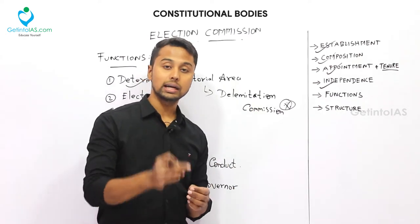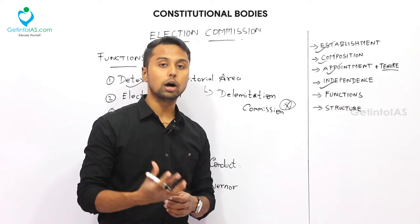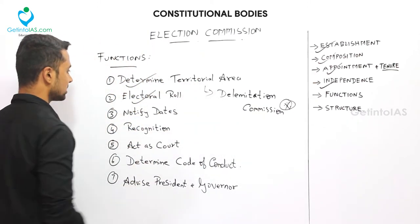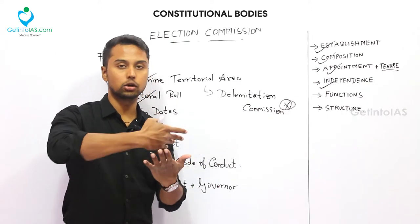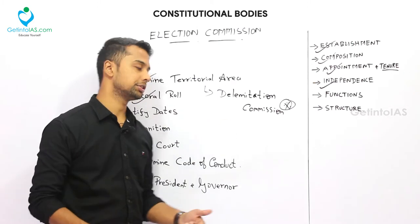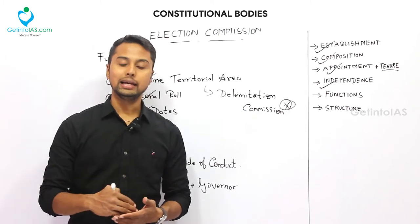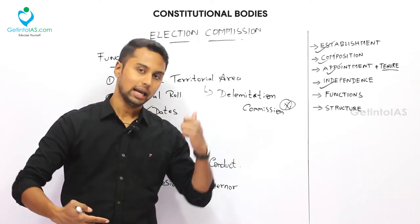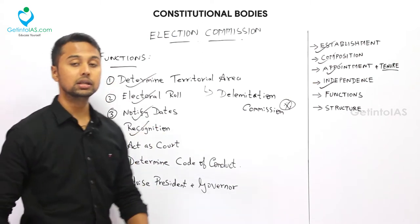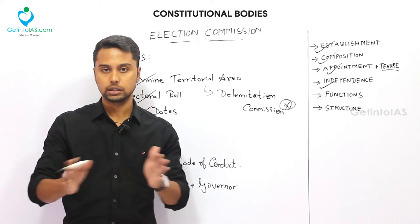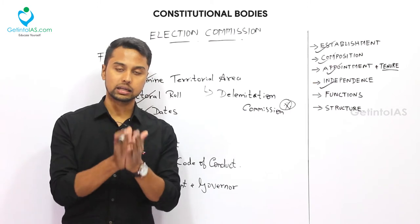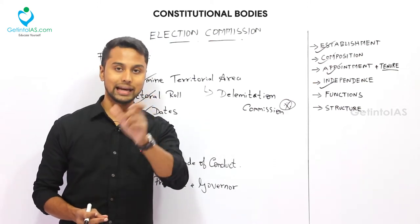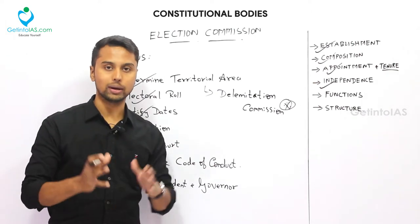Article 82 gives the President the right to form the Delimitation Commission, while Article 170 gives the Governor the right to form a Delimitation Commission for his own state. The composition of the Delimitation Commission includes retired Supreme Court judges, the Chief Election Commissioner, and the respective State Election Commissioner. The second function is preparing the electoral roll — who can vote — for every election. The third function is to notify dates and prepare the full schedule for Parliament and State Assembly elections.